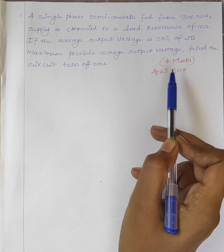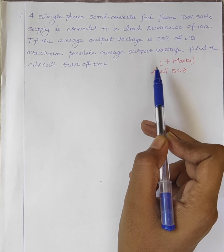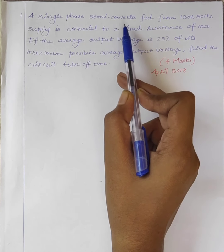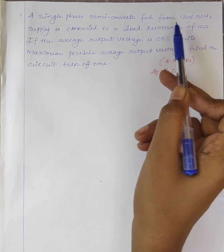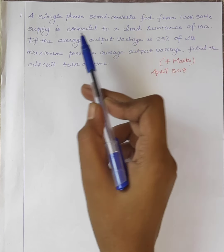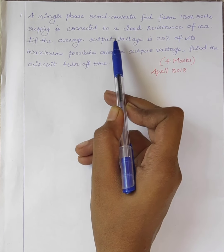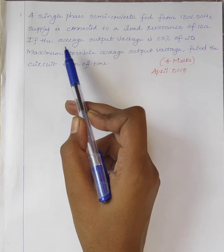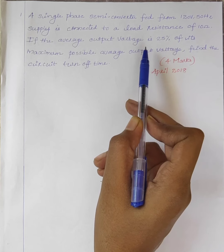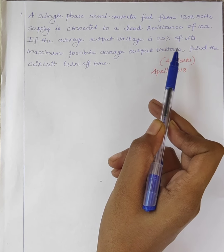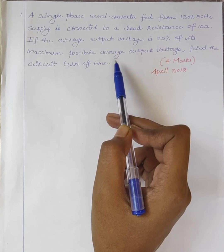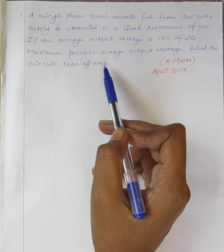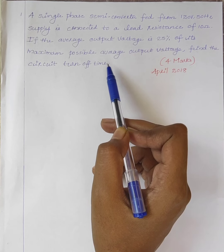This is an April 2018 question. The question is: a single-phase semi-converter fed from 120V 50Hz supply is connected to a load resistance of 10 ohm. If the average output voltage is 25% of its maximum possible average output voltage, find the circuit turnoff time Tc.